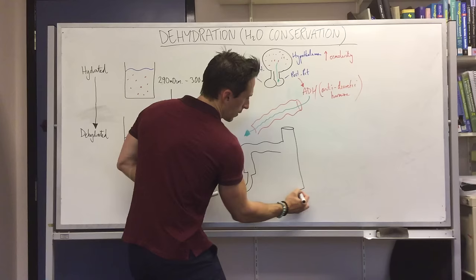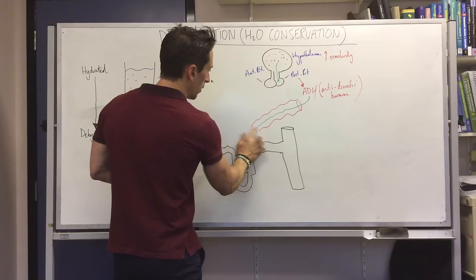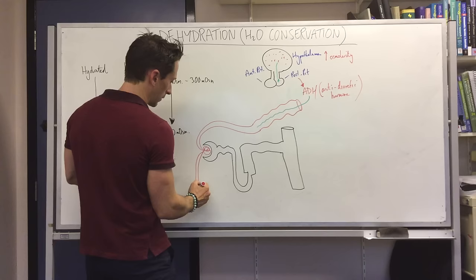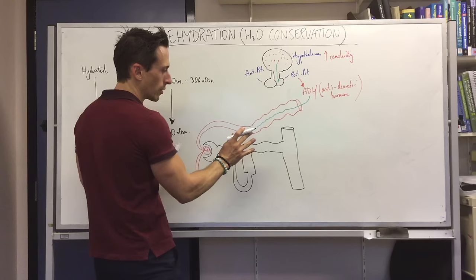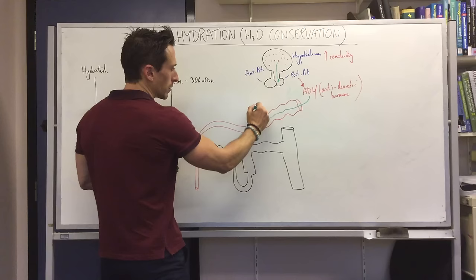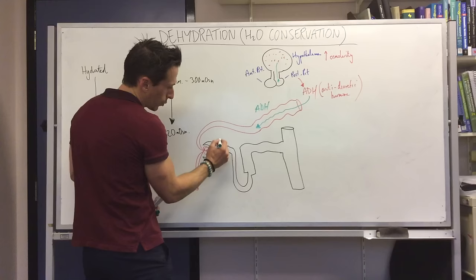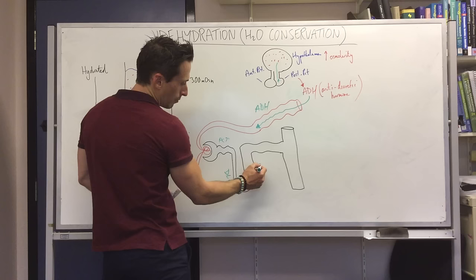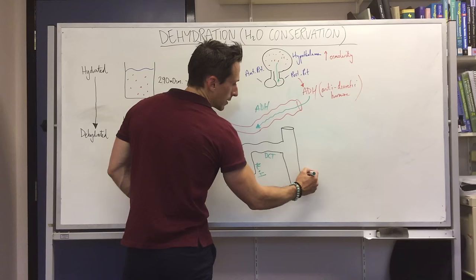And you know from watching the previous videos on the nephrons they've got different components. So remember this blood is ultimately going to make it down to the nephron, which means antidiuretic is also going to make it to the nephron. But where specifically does antidiuretic hormone act? So ADH is in here, where does it act? Well remember you have the Bowman's capsule, the proximal convoluted tubule, the descending loop of Henle, the ascending limb of the loop of Henle, you have the distal convoluted tubule, and you have the collecting ducts.